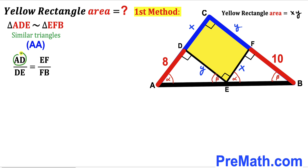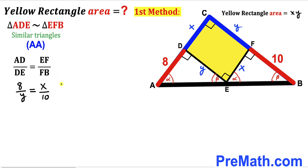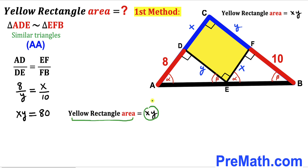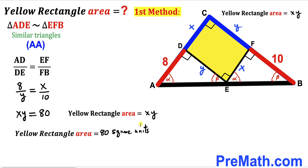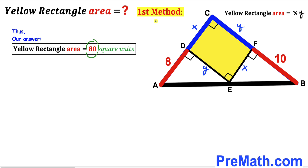Since these triangles are similar, we set up a proportion: AD over DE equals EF over FB. Substituting AD = 8, DE = Y, EF = X, and FB = 10, we get 8/Y = X/10. Cross-multiplying gives X times Y = 80. Since the rectangle area is X times Y, the yellow rectangle area is 80 square units by the first method.